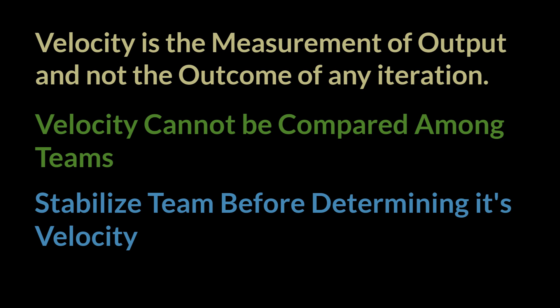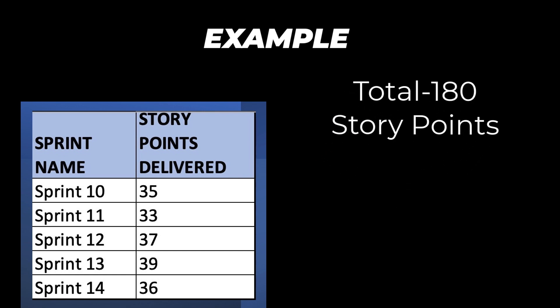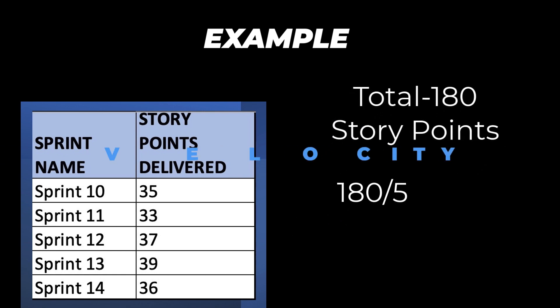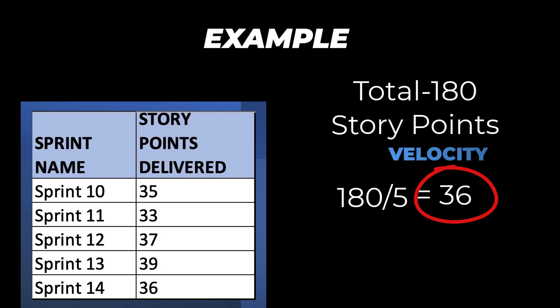Now we know something about velocity — let's take an example and see how to calculate it. Here we have Team A in their 14th sprint, working at a sustainable pace from the past few sprints. They have been estimating in story points and have data of how many story points were delivered from sprint 10 through sprint 14. To calculate velocity, the team adds the story points for these five sprints and divides by 5 to get the average velocity. In this case, the velocity comes out to 36.